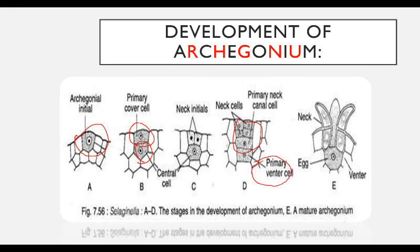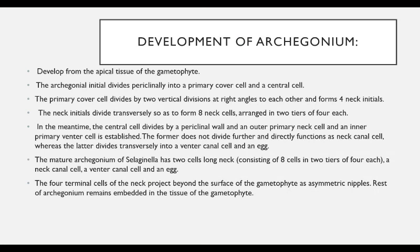The central cell undergoes a transverse division forming an upper primary neck canal cell and a lower primary ventral cell, and the central cell also gives rise to the egg cell. The mature archegonium is short and flask-shaped, embedded in the female gametophytic tissue with the upper tier projecting out. The four cells of the upper tier of the neck are called cover cells; the neck encloses the neck canal cell, ventral canal cell, and egg cell. At maturity, the neck canal cell and ventral canal cell disorganize and absorb a large amount of water, creating pressure to separate the cover cells apart, allowing the antherozoids to enter the archegonium and reach the egg.